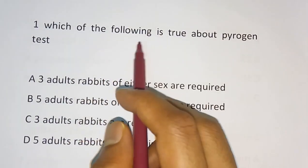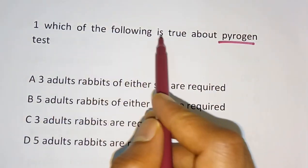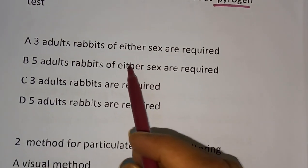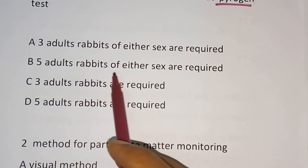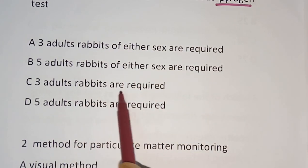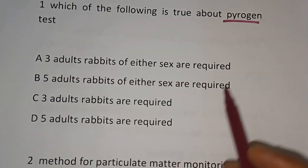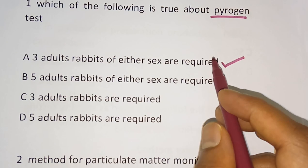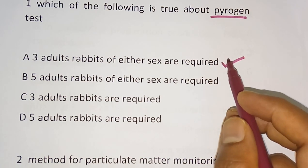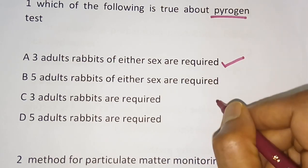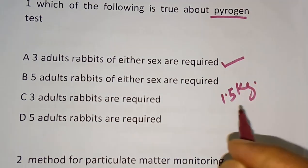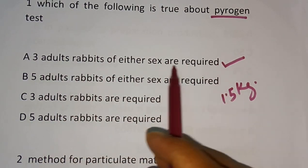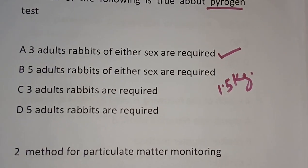Question 1: Which of the following is true about pyrogen test? Options: three adult rabbits of either sex are required, five adult rabbits of either sex are required, three adult rabbits are required, five adult rabbits are required. The correct answer is: three adult rabbits of either sex are required. Each rabbit should be not less than 1.5 kg.